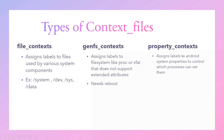Next is property context. This assigns labels to Android system properties to control which process can set them. Not every system property can be set by every process. For example, all properties related to date and time can only be set by the date and time system service or process. The init process reads this property context configuration during startup, and certain properties should be allowed to change only by certain apps or processes — for that we use property context.